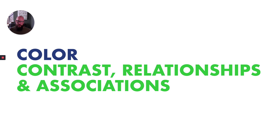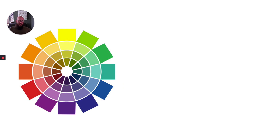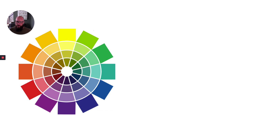Next, we want to talk about color — specifically contrast, color relationships, and color associations. Color is present when light strikes an object and is reflected back into the eye. This traditional 12-spoke color wheel may look familiar, but its roots go back to the mid to late 1600s, beginning with the work of Sir Isaac Newton. It's taken collaboration between artists and scientists to fully understand how color works and operates.